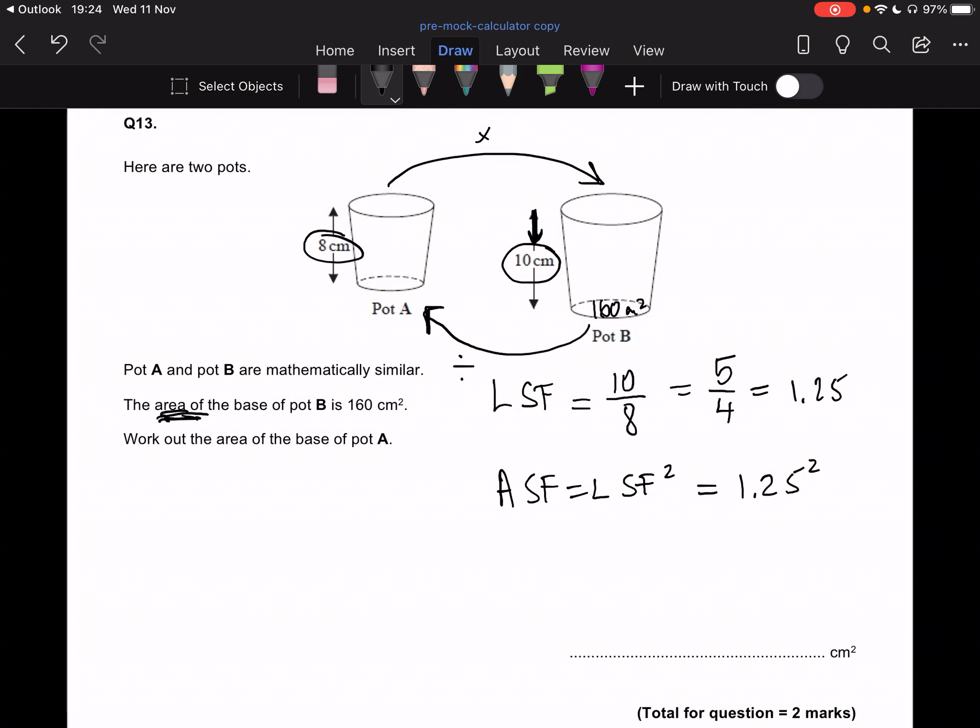So the area of the base of the big pot divided by the area scale factor. So 1.25 squared. I must not forget the squared. So in my calculator, of course, divided by 1.25 squared equals 102.4, which is our final answer.